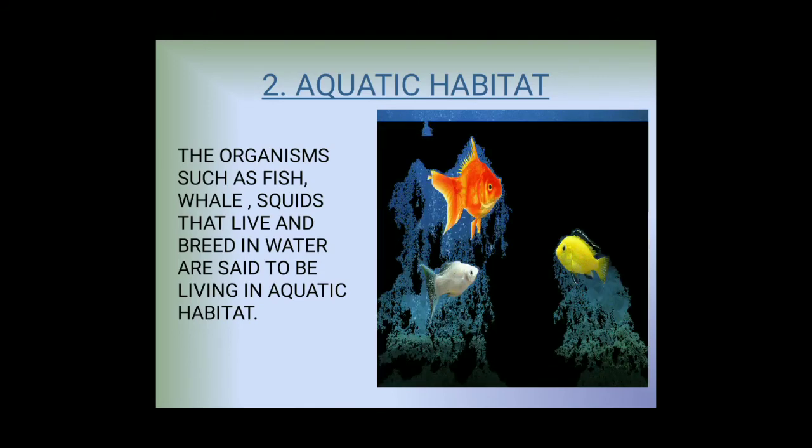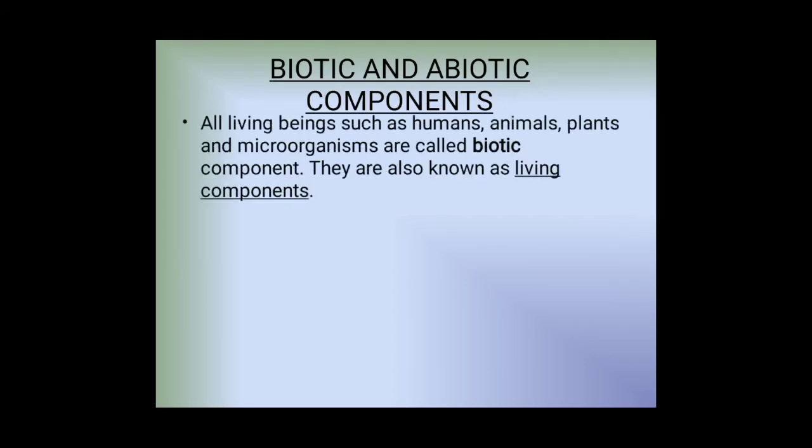For the surrounding biotic and abiotic components - in any habitat we come in contact with two types of components: biotic and abiotic. All living beings such as humans, animals, plants, and microorganisms are called biotic components. They are also known as living components.